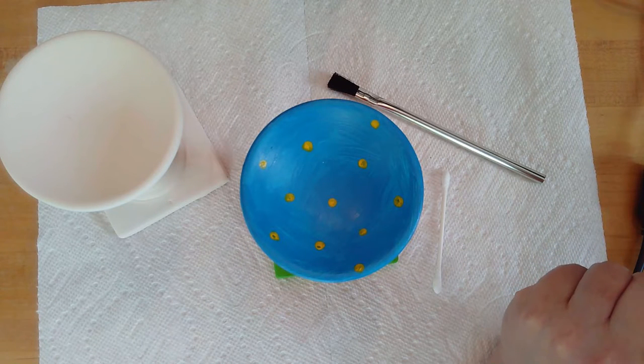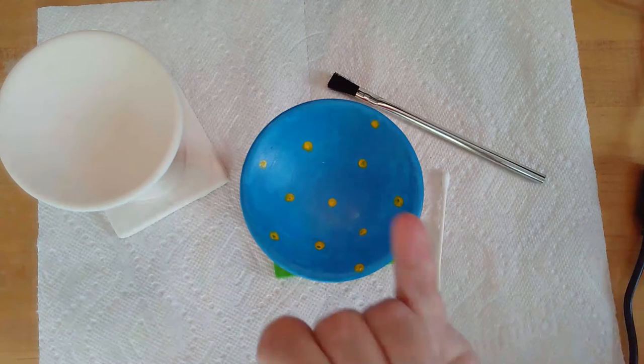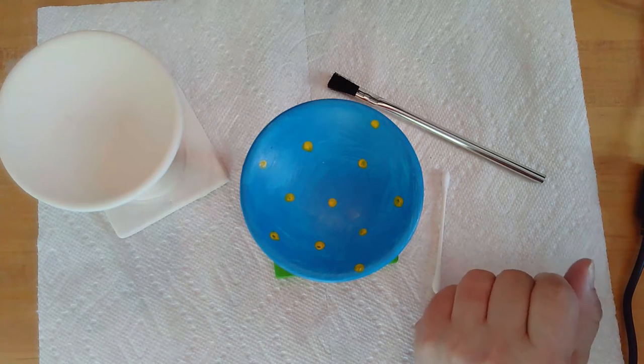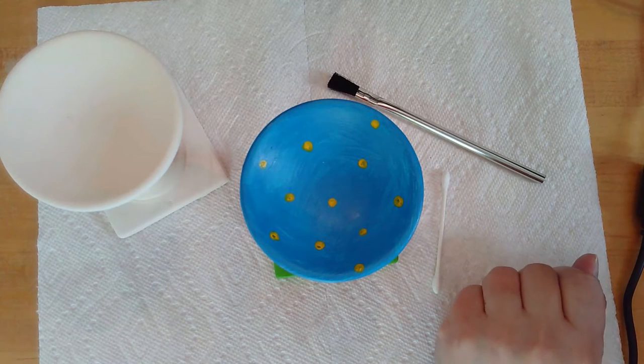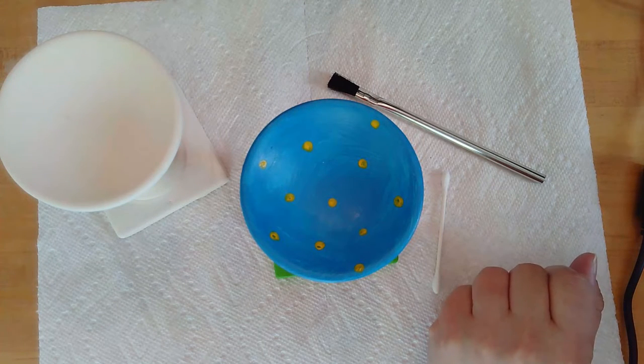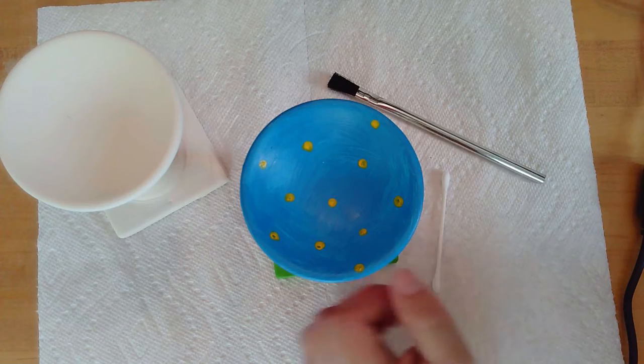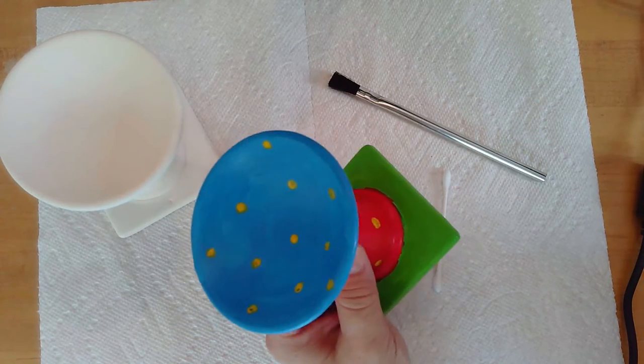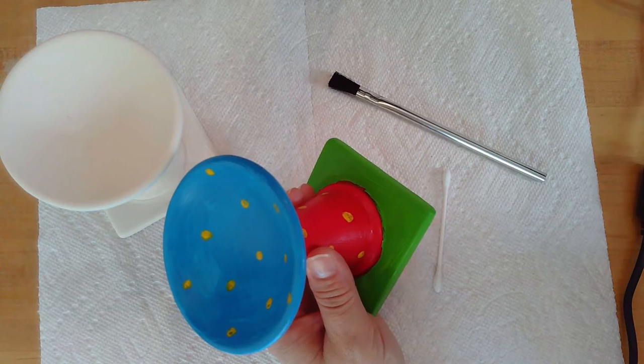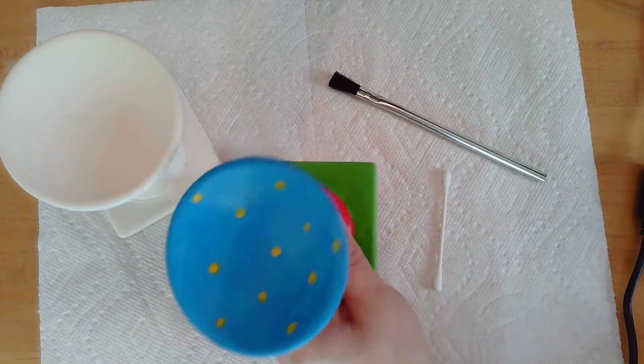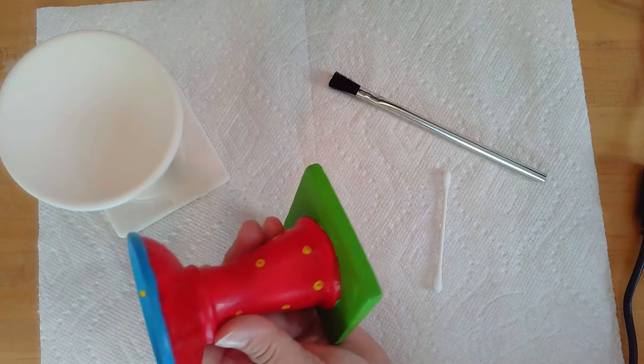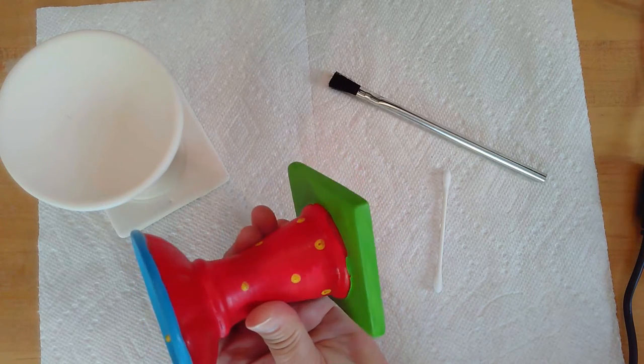You could also use the end of an old pencil eraser, as long as you don't care about using it to erase anything afterwards. You could use your fingertip. All of these things are perfectly fine to use, and you can be as creative as you want. You can do stripes, you can use words, you can do flowers, you could do polka dots, you can use swirls, however you want your craft to look at the end.